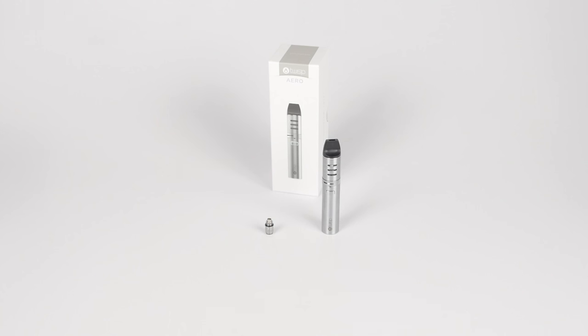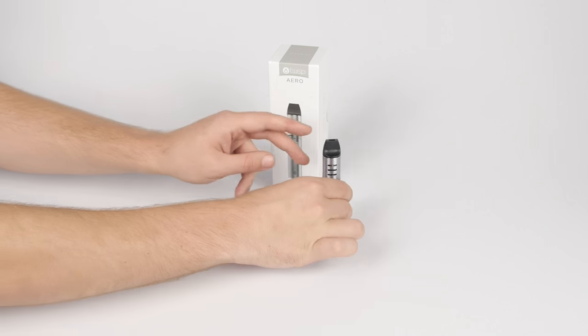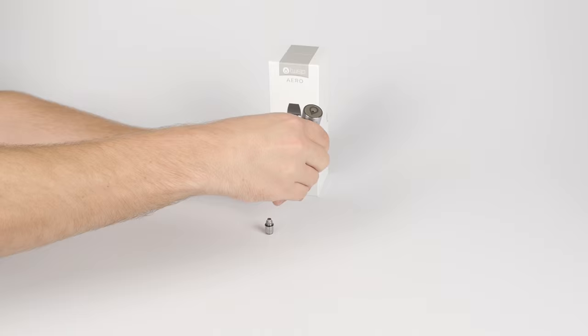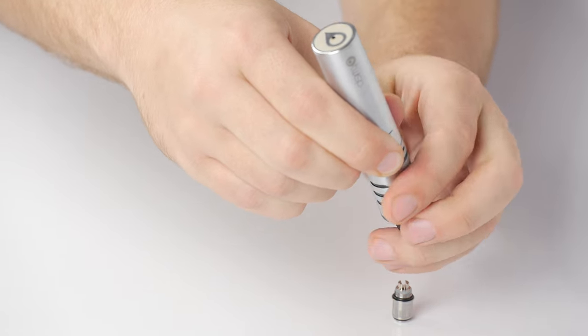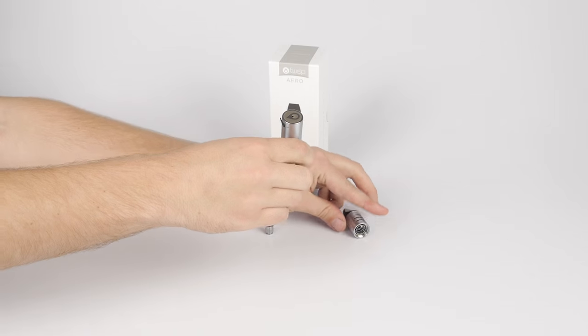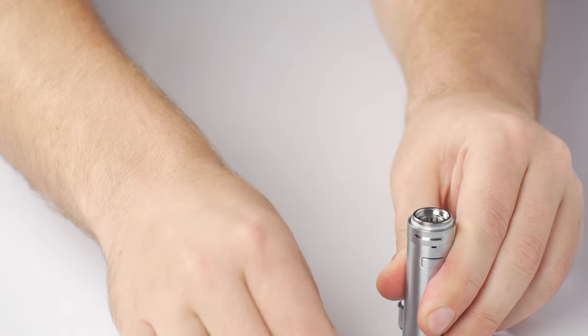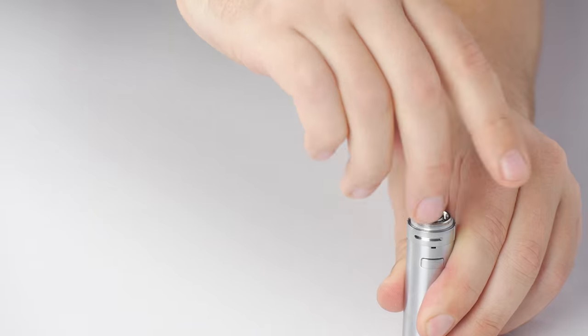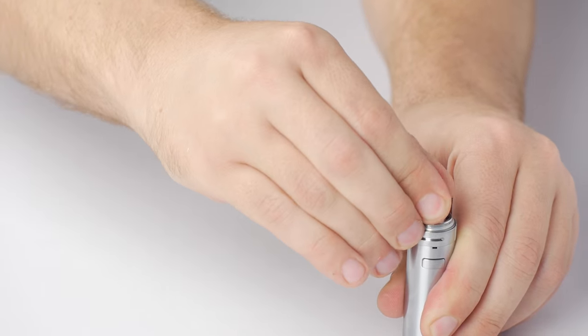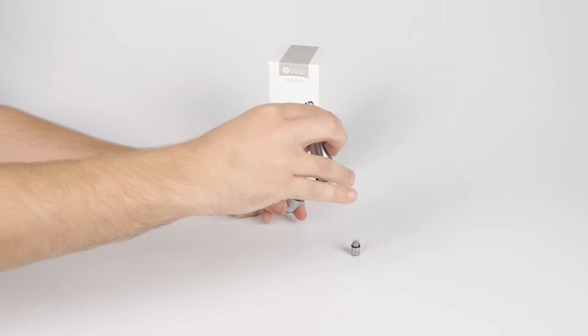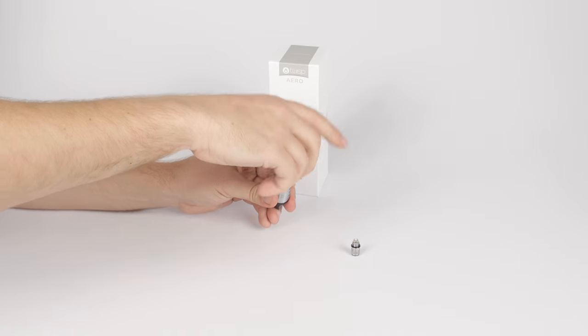Atomizer heads do wear over time. Replace it when performance diminishes or a burnt flavor appears. To replace the atomizer head, hold your AERO upside down and unscrew the atomizer tank from the atomizer base and battery. Unscrew and remove the old atomizer head. Screw in the new atomizer head, making sure it is tightly held in place. Then screw the atomizer tank back onto the base and battery.